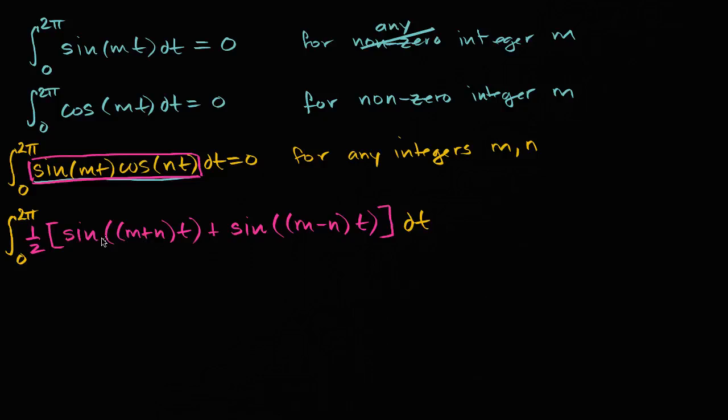Now if we rewrite this using integral properties, we can distribute the one-half. So we're going to distribute the one-half and use some of our integral properties.